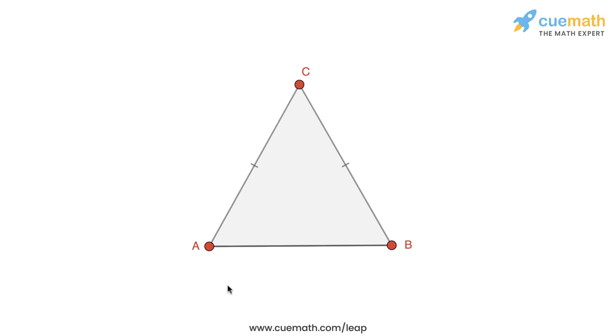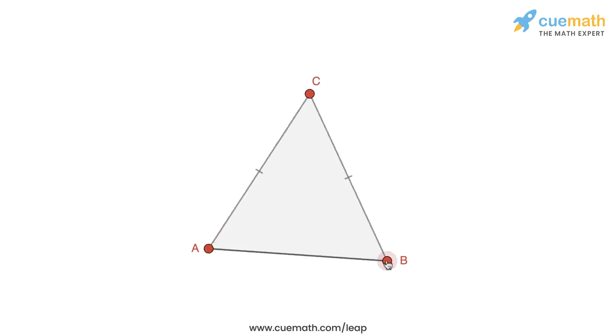All right, so here's a simulation of an isosceles triangle ABC in which AC and BC are equal. If I want, I can move around the vertices of the triangle ABC and observe it for various situations.